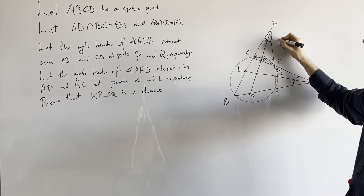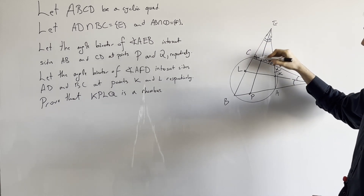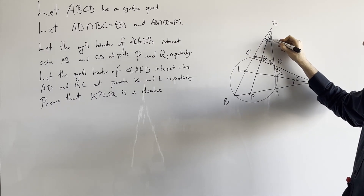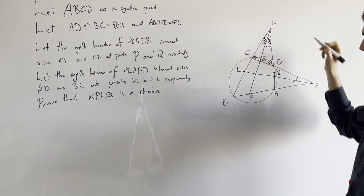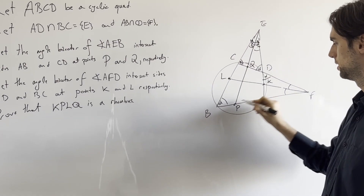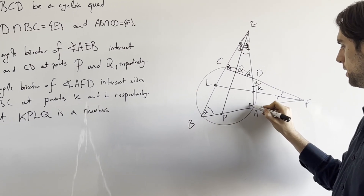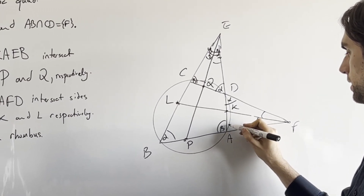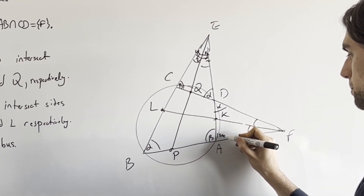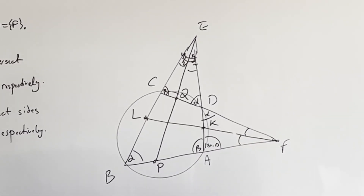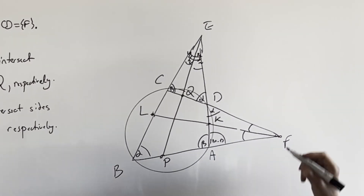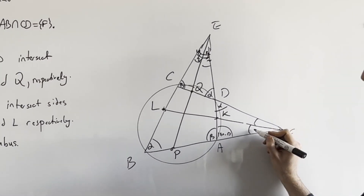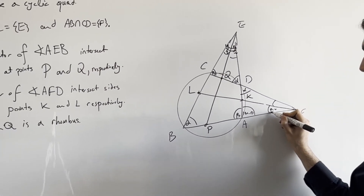Let's assign variables: alpha, beta, and gamma half and gamma half to the relevant angles. Then we have alpha and beta here. This angle is 180 minus beta. And then some angles are going to be beta plus gamma over two, depending on the configuration.